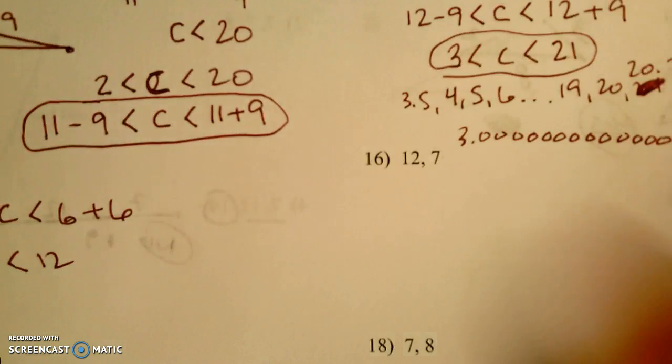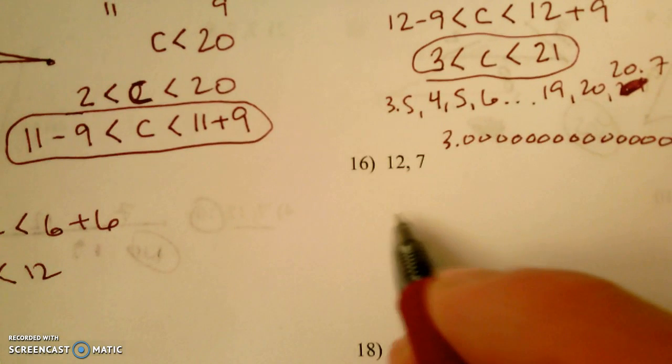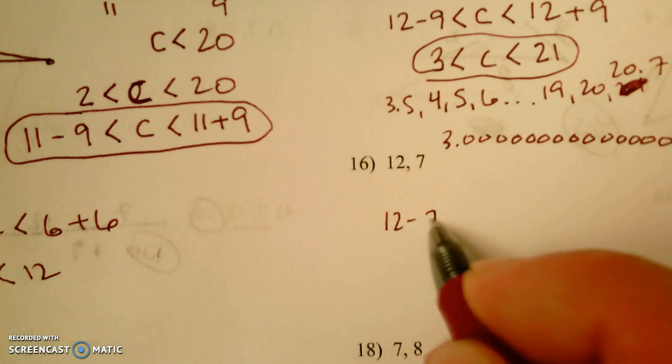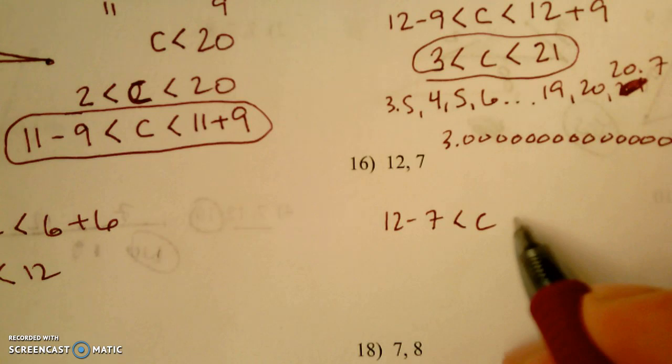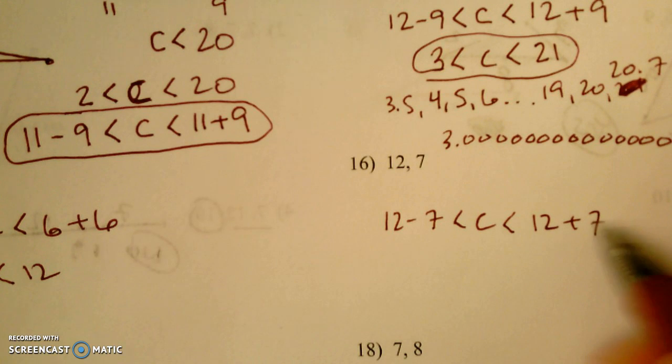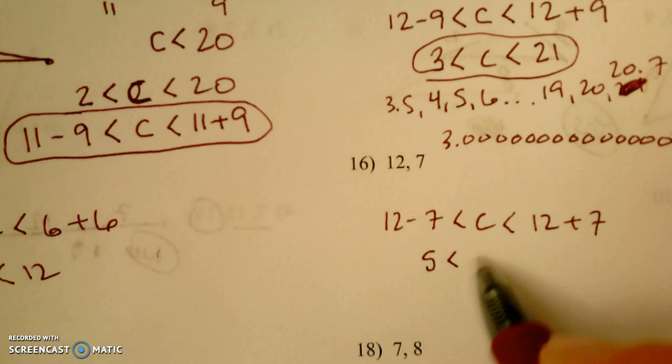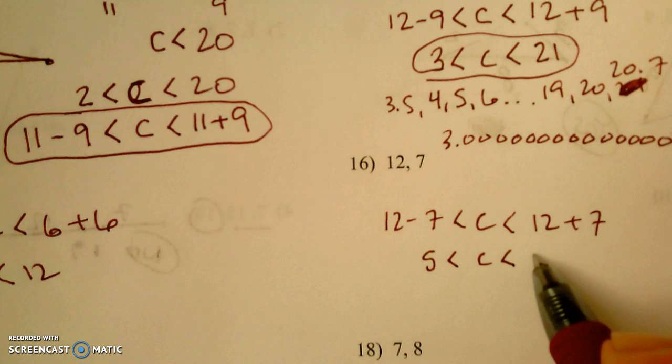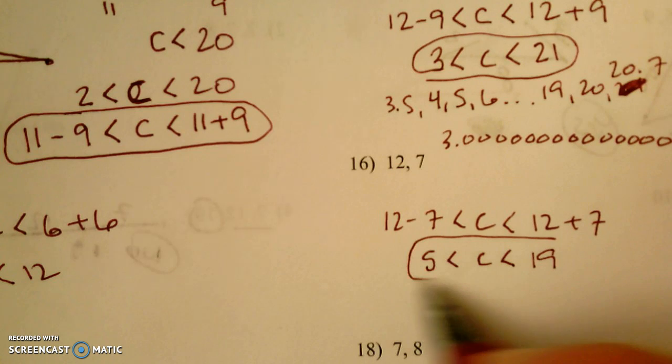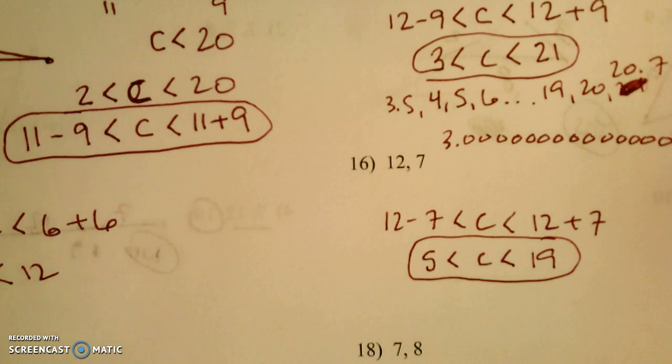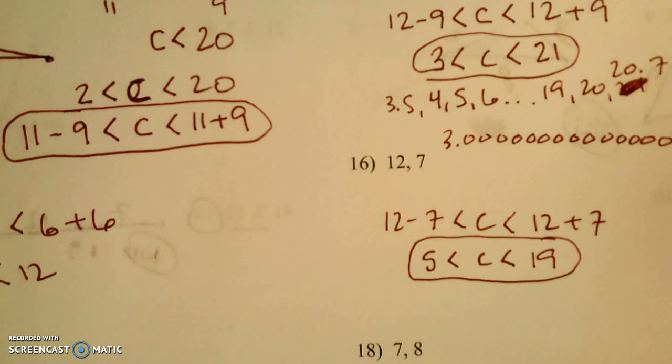Let's do one more. 12, 7. So we've got 12 minus 7. So c has to be bigger than that, but it has to be less than 12 plus 7. 12 minus 7 is 5. 12 plus 7 is 19. So c, our third side, has to be between 5 and 19.